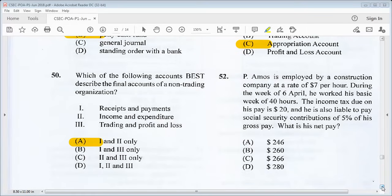52 says P. Amos is employed by a construction company at a rate of seven dollars per hour. During the week of 6th of April, he worked his basic week of 40 hours. The income tax due on his pay is 20% and he's also liable to pay social security contributions of 5% of his gross pay. What is his net pay? 40 hours at the rate of seven dollars per hour, so his gross pay is $280. Less income tax of twenty dollars, that is two hundred and sixty dollars left. Then we find 5% of $280, you get fourteen dollars. When you deduct fourteen dollars from $260, you are left with $246.